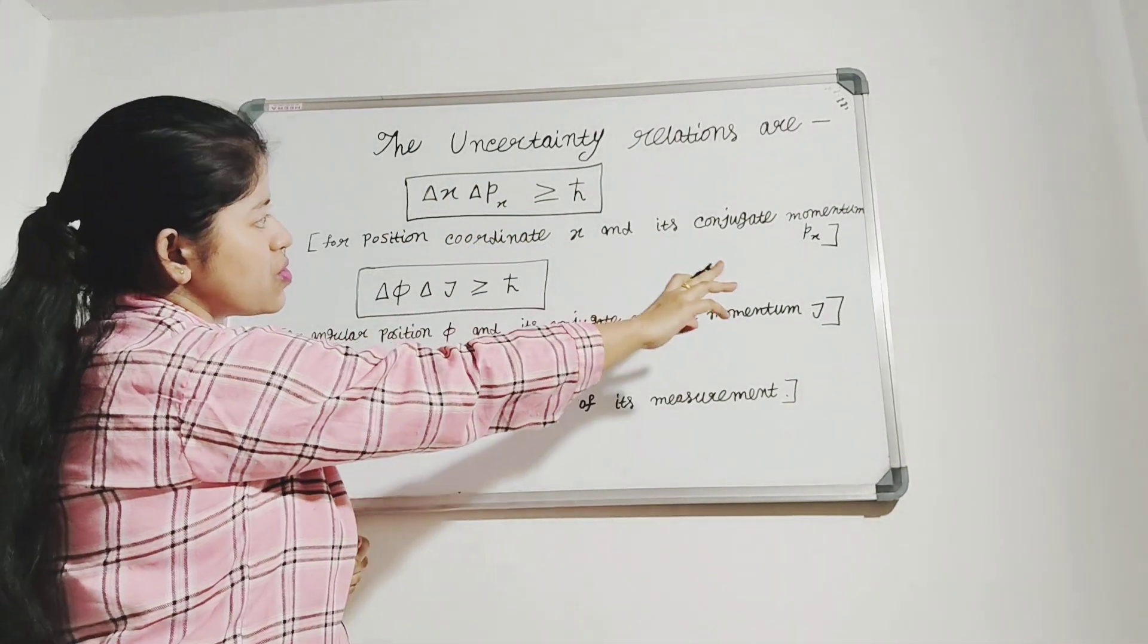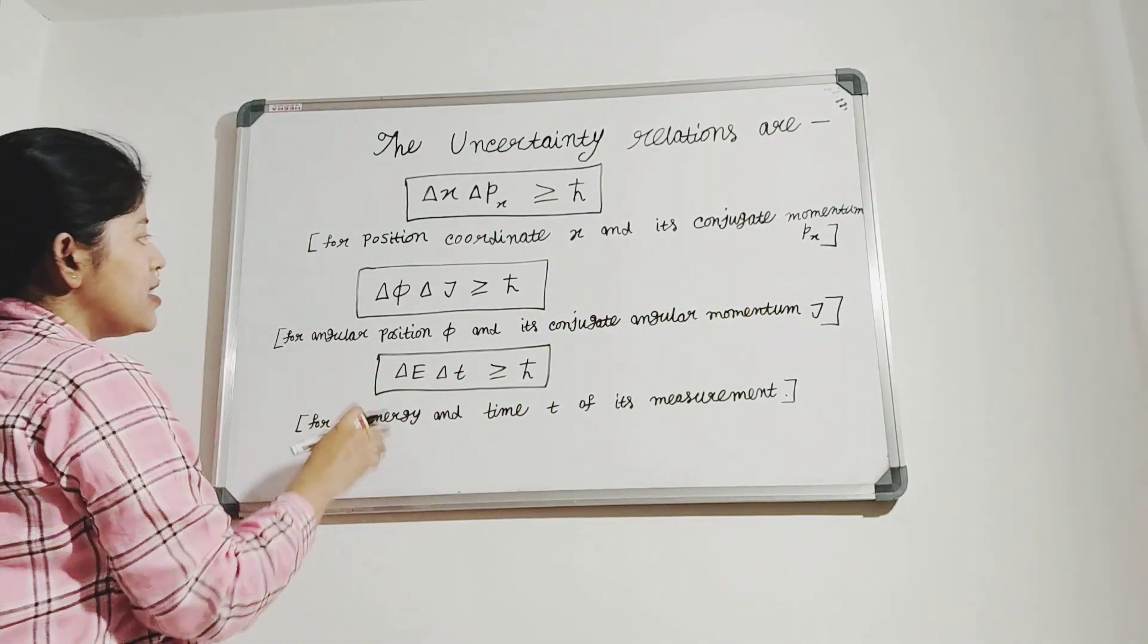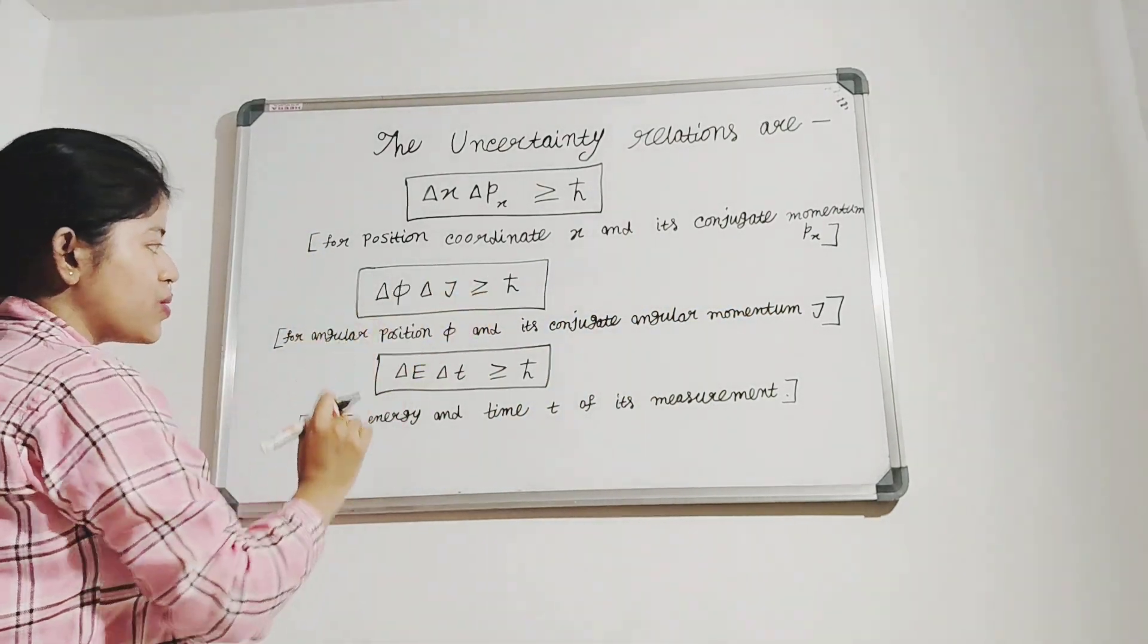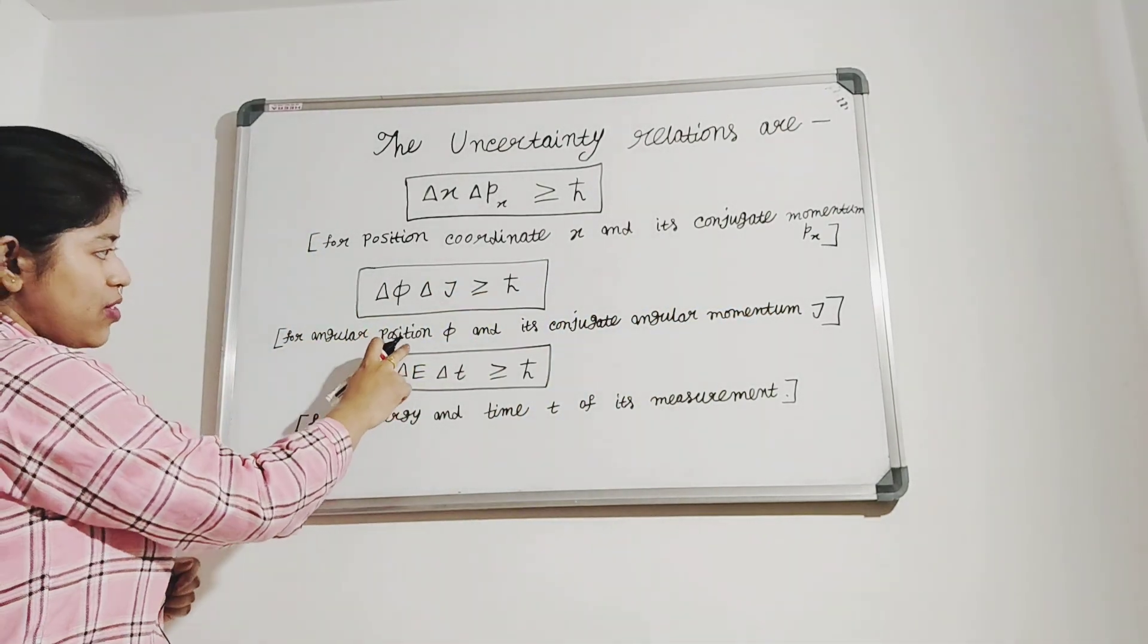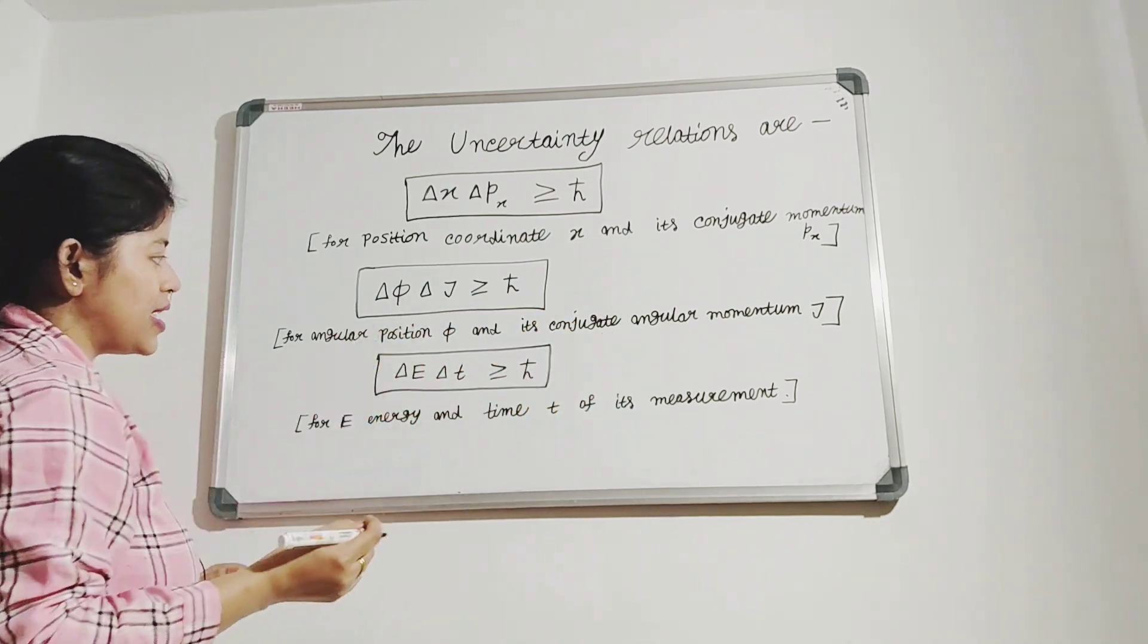And delta phi delta j is greater than or equal to h-cut, where phi is the angular position and its conjugate angular momentum is j.